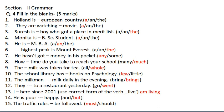Holland is a European country. They are watching a movie. Suresh is the boy who got a place in the merit list. Monika is a BSC student. He is an MBA. If you want to see the use of 'a' and 'an', then see my YouTube link for 'a' and 'an' — it is explained very well there.